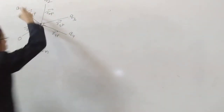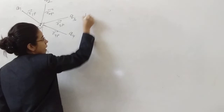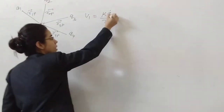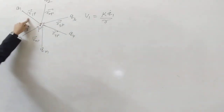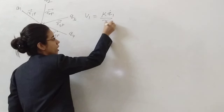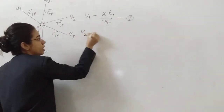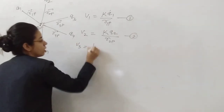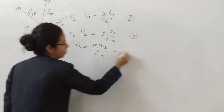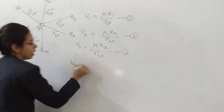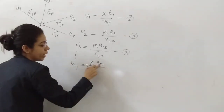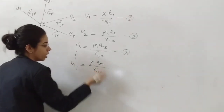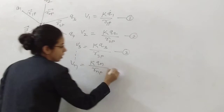Derivation start करते हैं। Q1 के कारण P point पर potential V1 होगा, formula KQ upon R से: V1 = KQ1 upon R1P — equation number 1। इसी तरह से V3 = KQ3 upon R3P — equation number 3। अगर हम Vn की बात करें तो Vn = KQn upon RnP — equation number 4। Position vector 1P, 2P, 3P से लेके NP same चल रहा है।